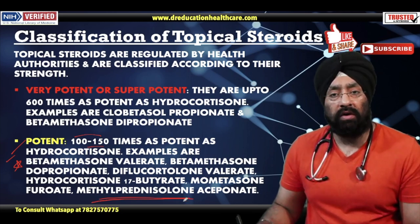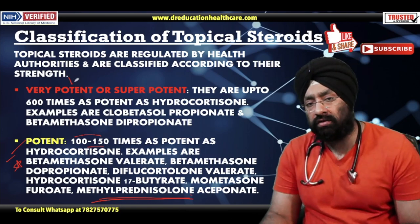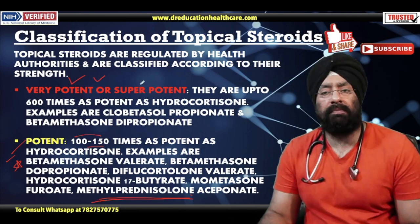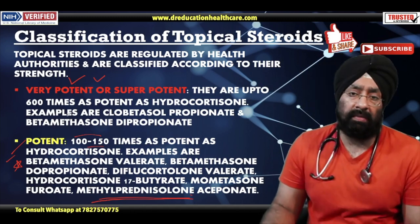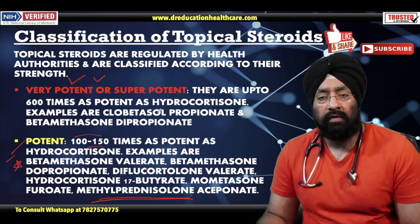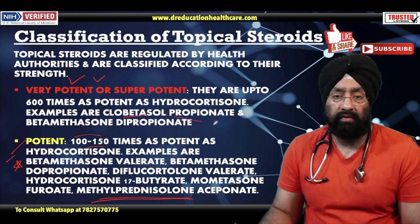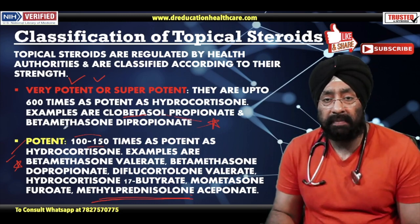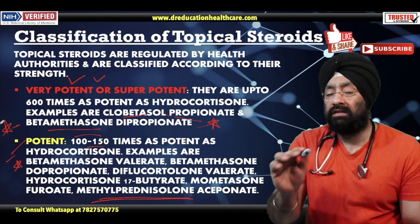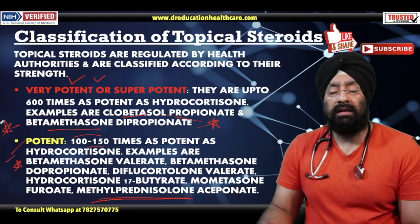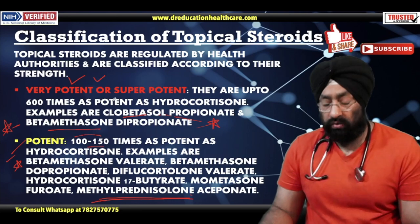Methylprednisolone — yahi naam Covid-19 mein use hua tha. Sabse potent, very very super potent, jo hai woh 600% zyada powerful hai hydrocortisone se — usse clobetasol kehte hain. Clobetasol bahut powerful hai, ya betamethasone dipropionate. Yeh naam commonly aata hai — jab bhi koi skin allergy ki cream aati hai toh iska naam milega.